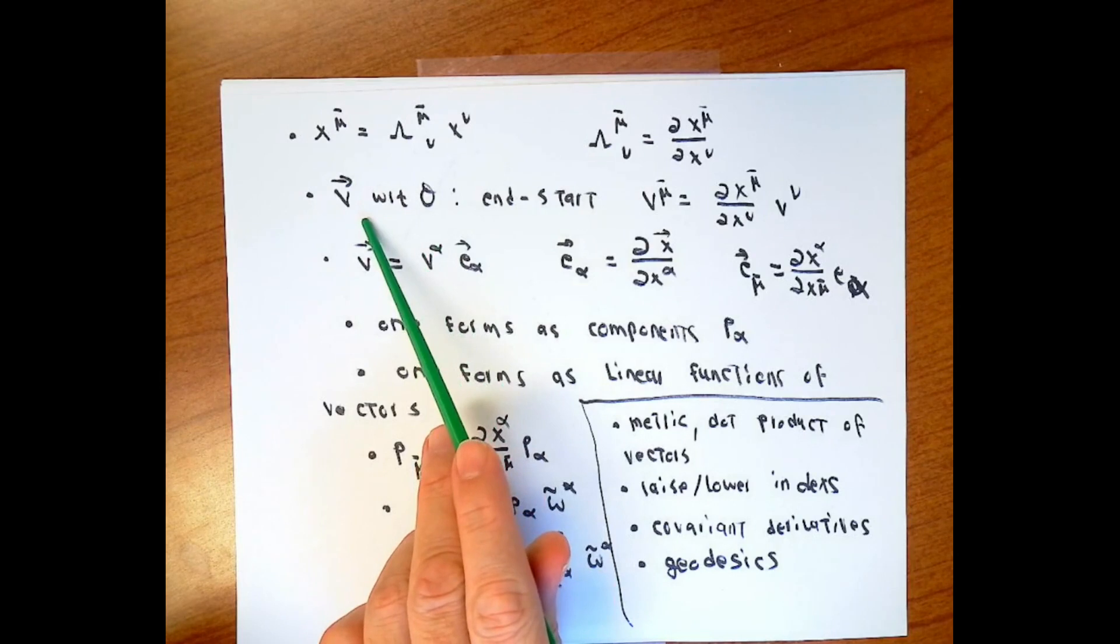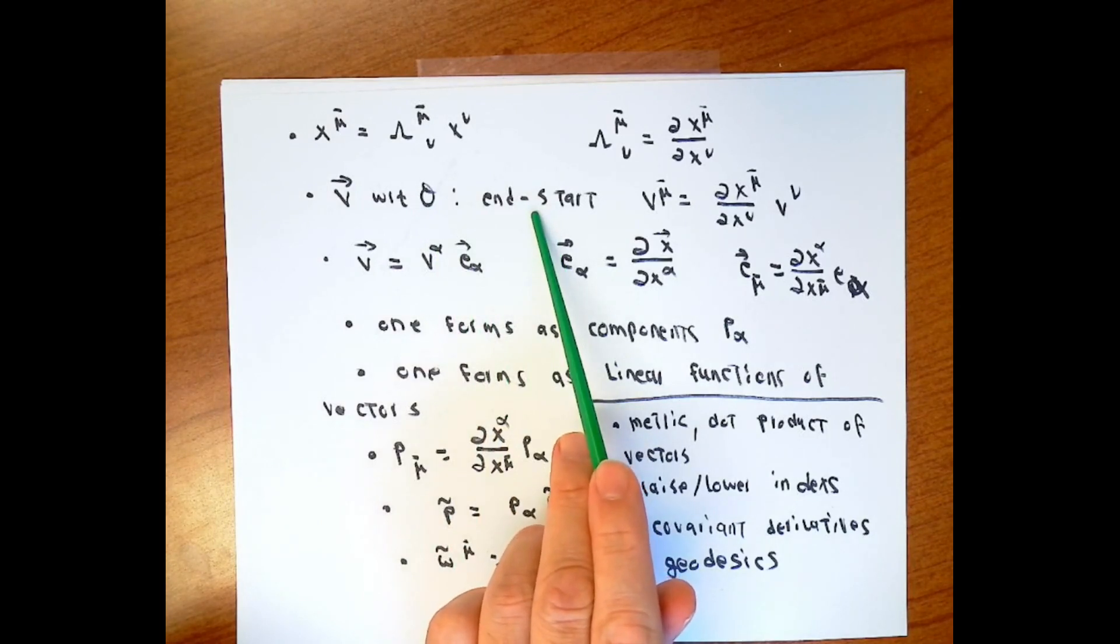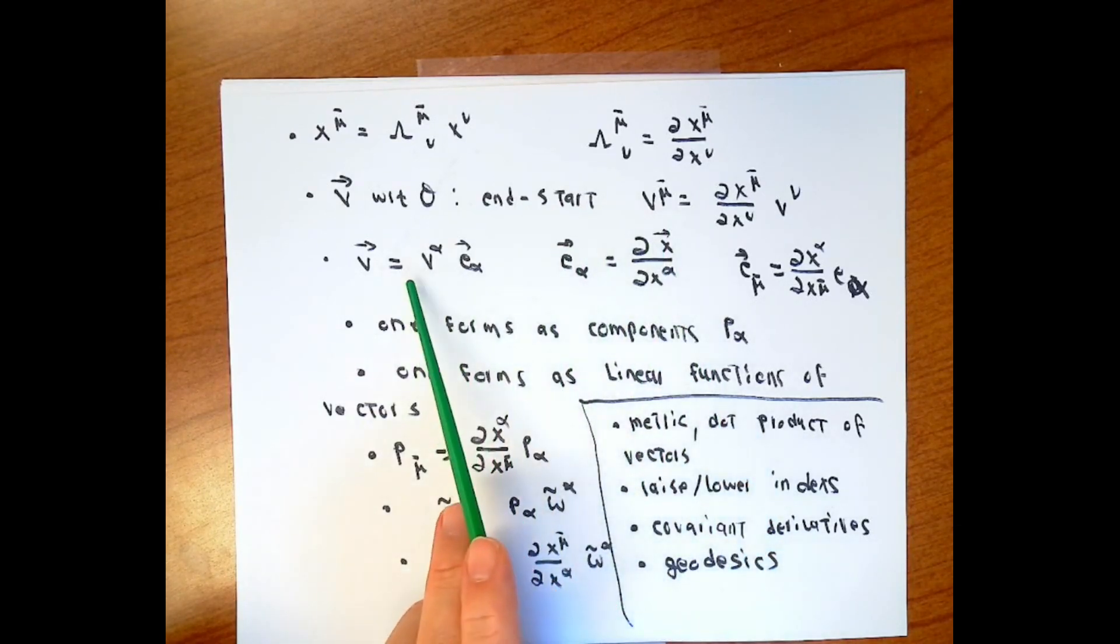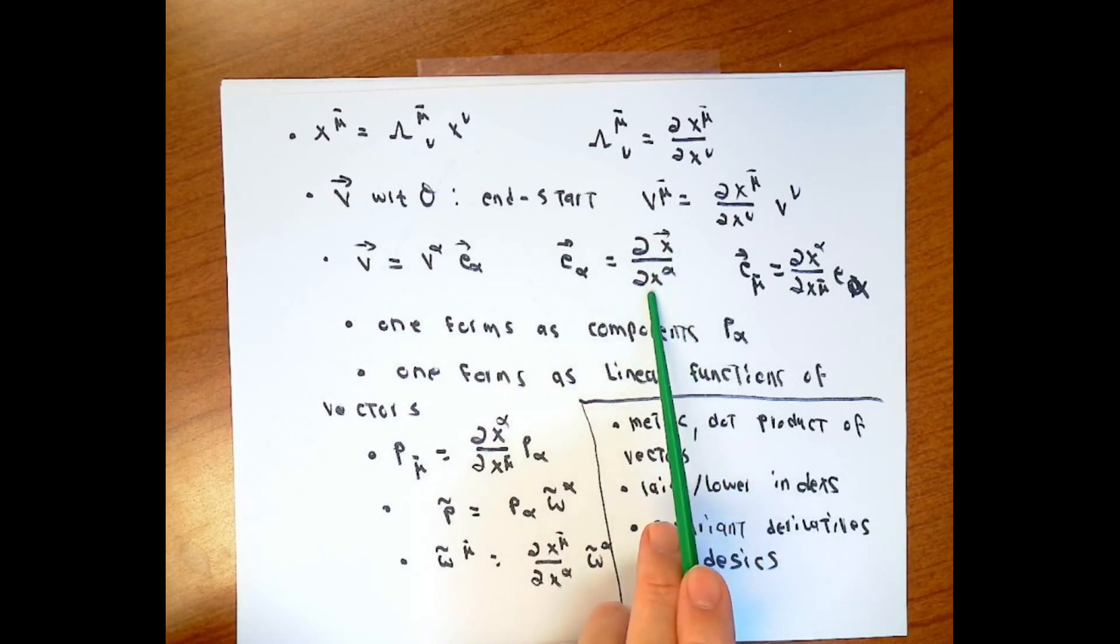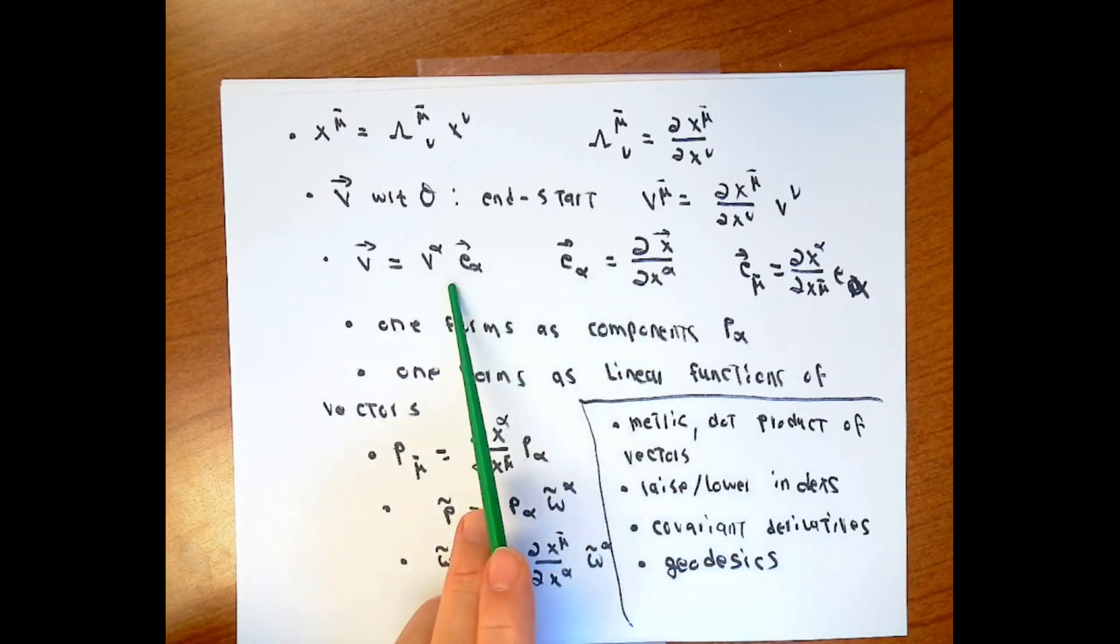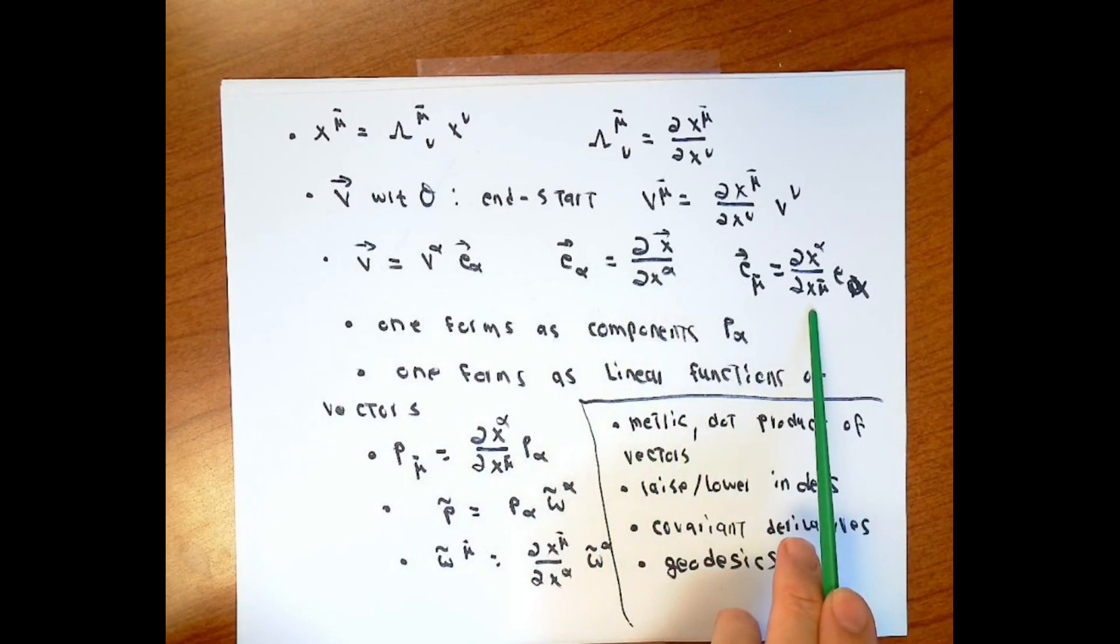We thought about expressing a vector with respect to some coordinate system. That led us to end minus start, which leads us to the vector component transformation law. We make what's called a coordinate basis. We look at the partial derivative of position with respect to one of the coordinates and call this one of our coordinate basis vectors. In a coordinate basis, or in any basis, I can write the vector as its components and the basis vectors. In the case though where I do have these kind of basis vectors, we figured out that this must be true.